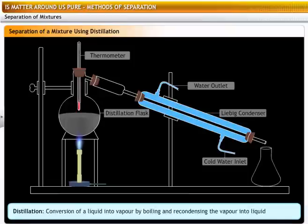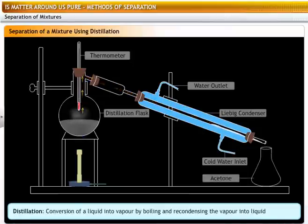Heat the mixture. You will see that the acetone, which has a lower boiling point, vaporizes first and then condenses in the condenser. It can be collected from the condenser outlet. Water gets left behind in the flask.